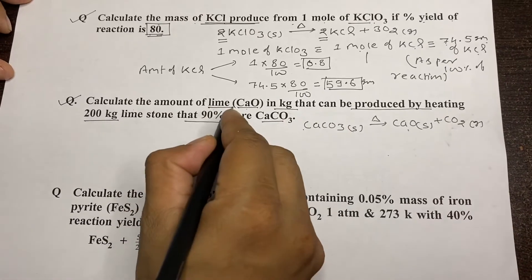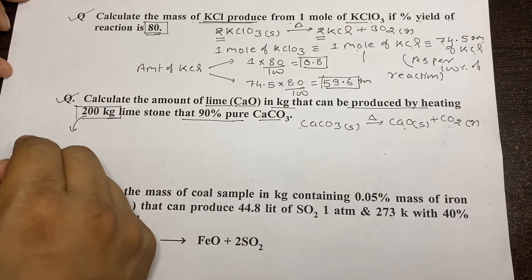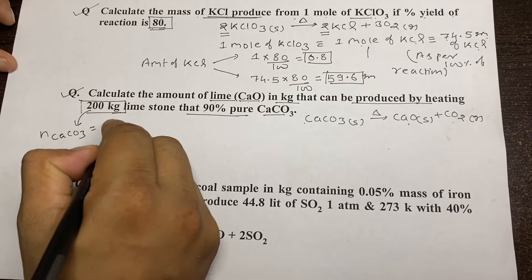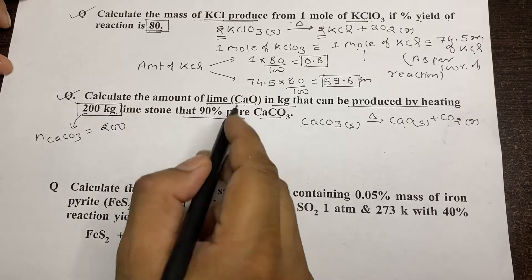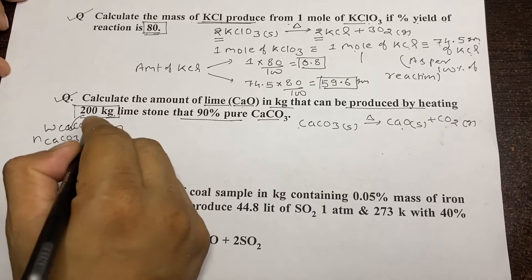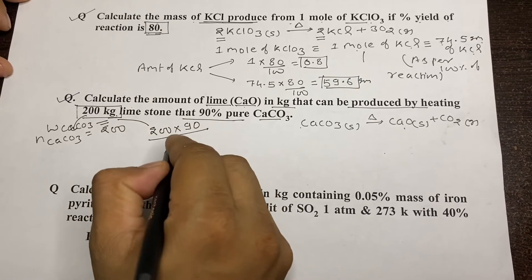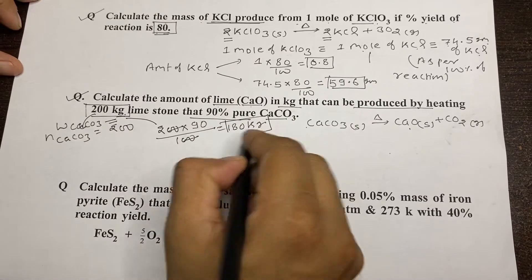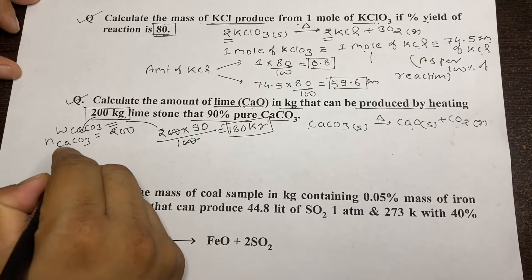We are given 200 kg of limestone. Since it is 90% pure, we first find the mass of pure CaCO₃: 200 kg multiplied by 90% equals 180 kg. So the mass of pure calcium carbonate that will take part in the reaction is 180 kg.